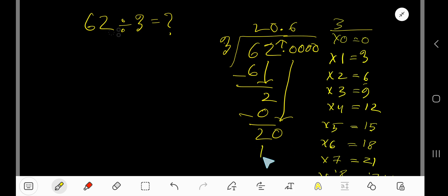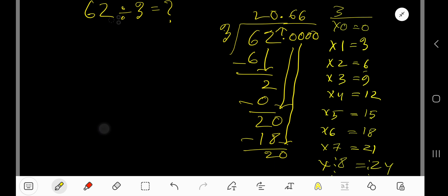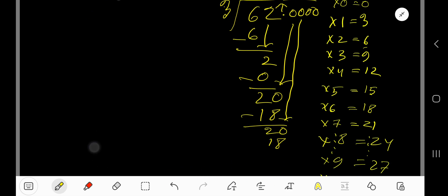Subtract to get 2. Bring down another 0. 3 goes into 20 again, 6 times. 3 times 6 is 18, then subtract. You are getting 2. Bring down another 0.